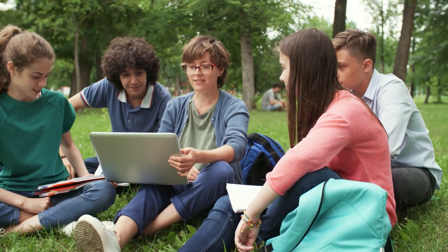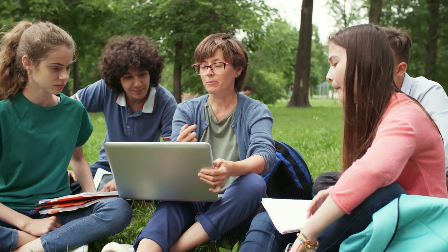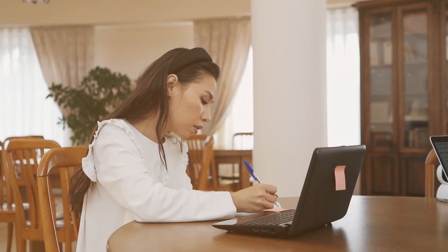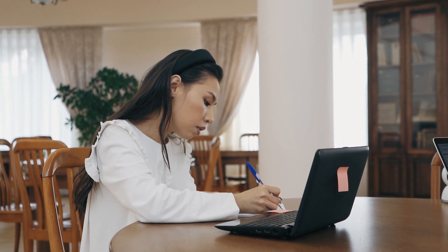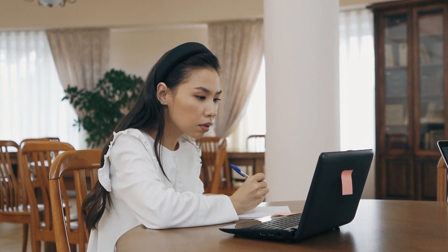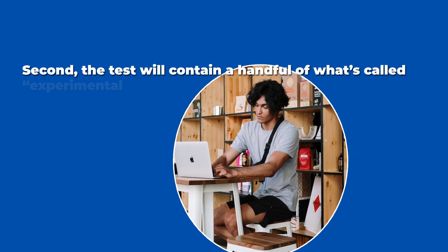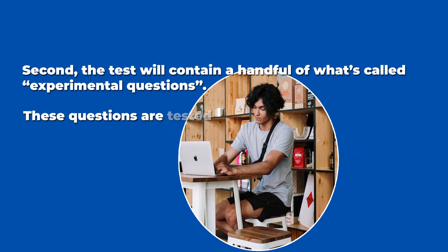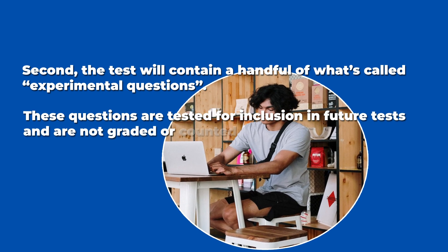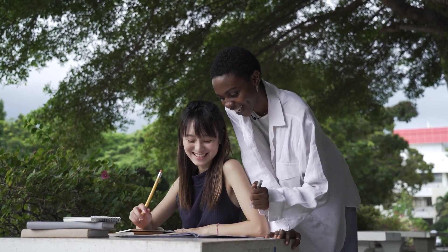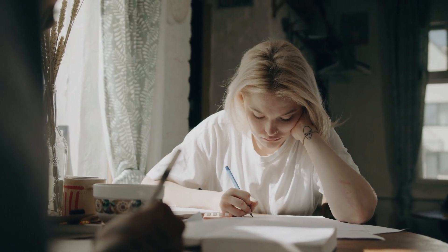We have a whole discussion dedicated to GMAT algorithm experiments — check the link in the description. There are also two unique elements to GMAT scoring. First, the test will penalize you for leaving questions unanswered, even more than if you simply guess or answer them incorrectly. So don't leave questions unanswered under any circumstances. Second, the test will contain a handful of what's called experimental questions. These are tested for inclusion in future tests and are not graded or counted in score calculations. However, you will not need to know which questions are experimental, so you really don't need to worry about them.